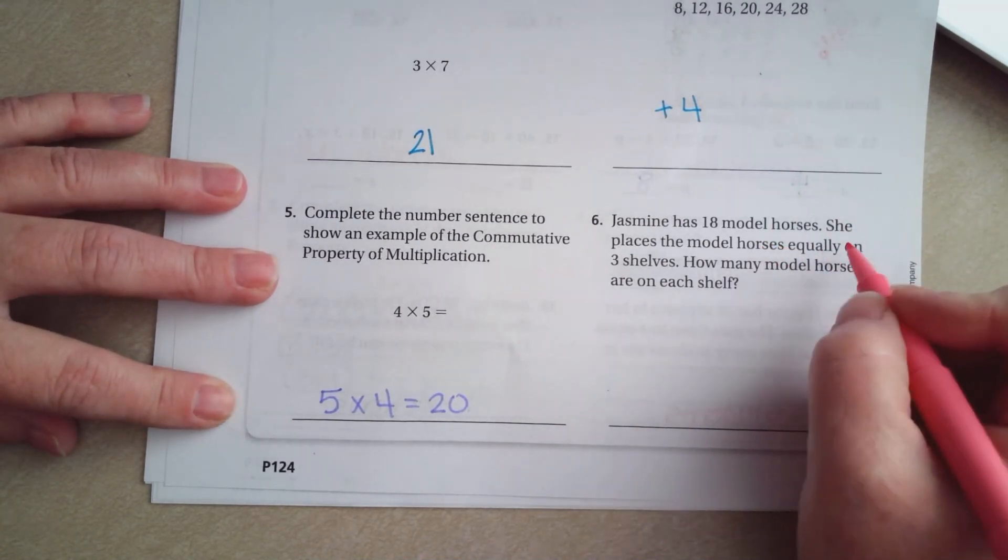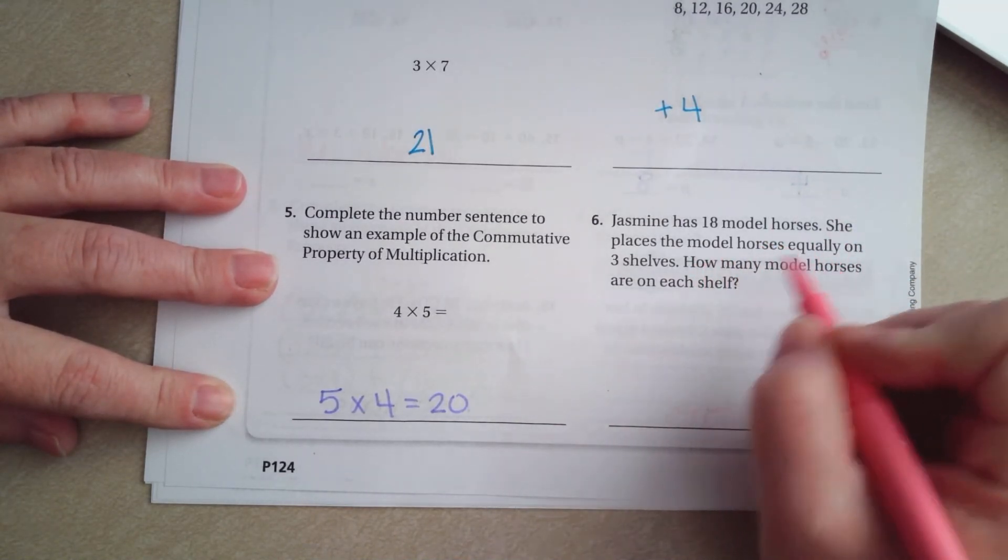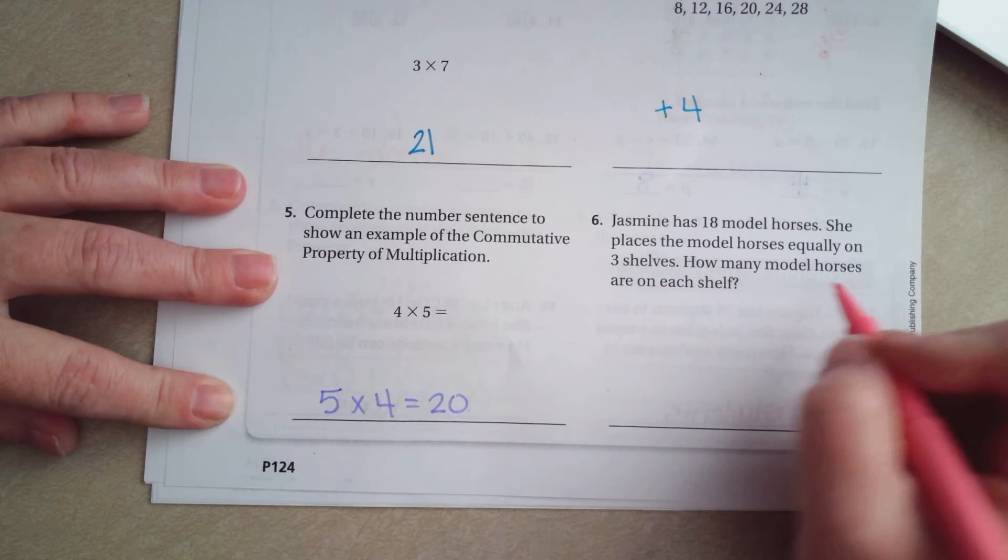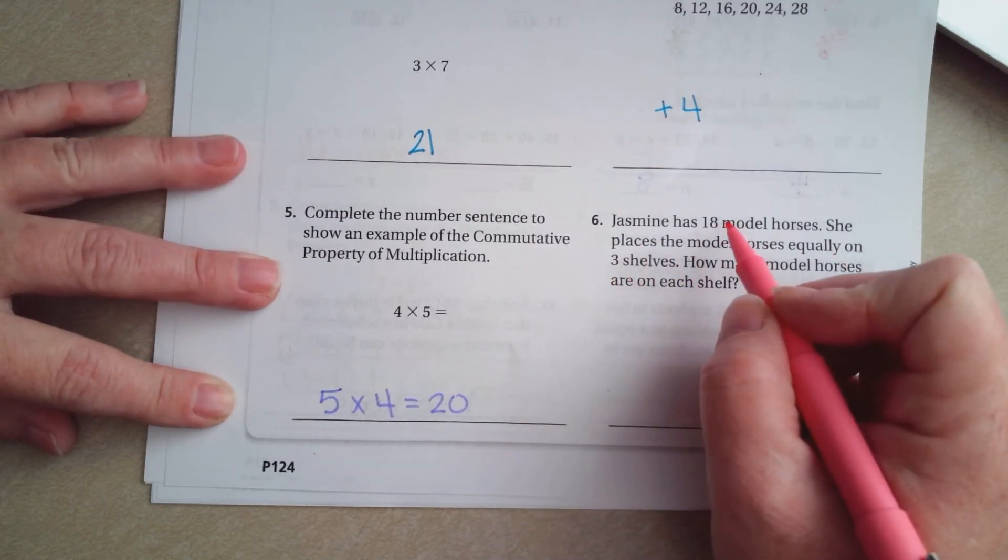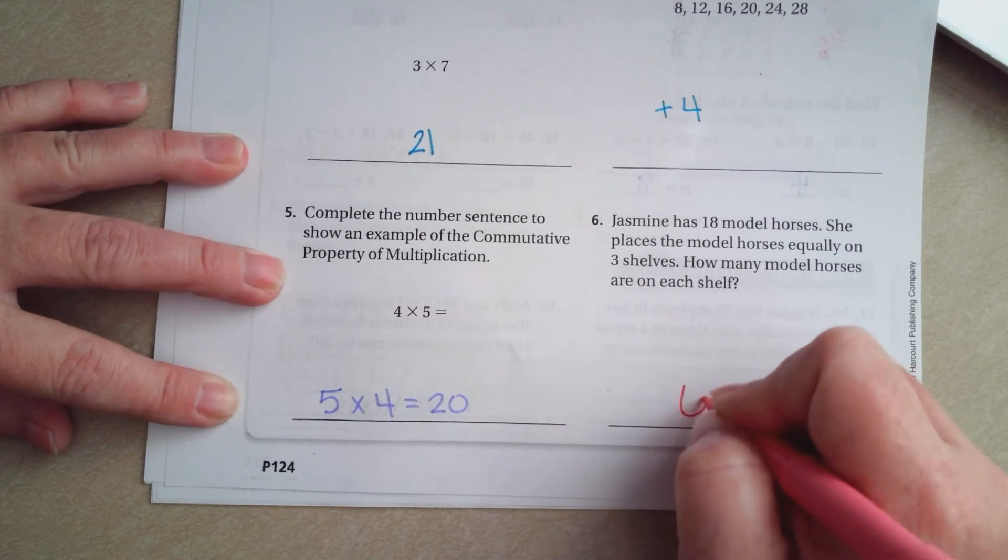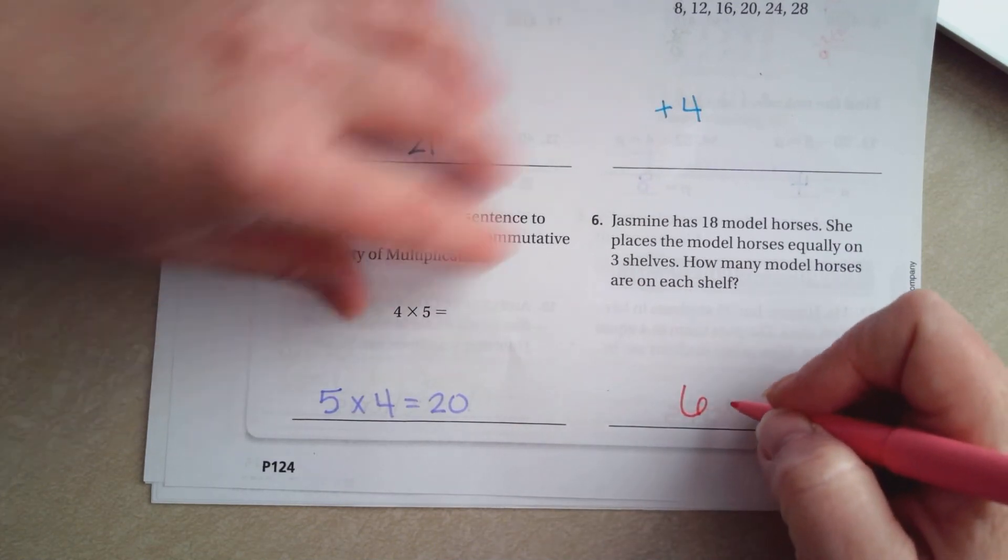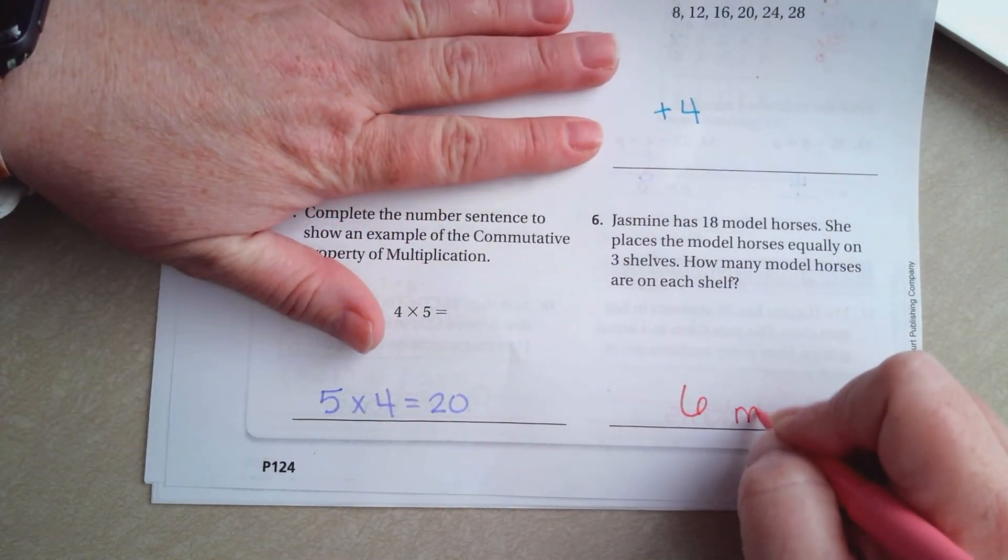Jasmine has 18 model horses. She places the model horses equally on 3 shelves. How many model horses are on each shelf? Well, what times 3 is 18? Well, 3 times 6 is 18, so 6 model horses.